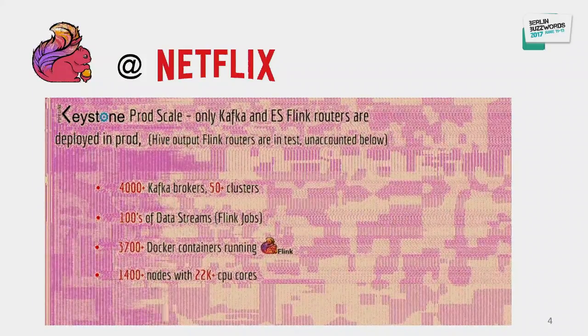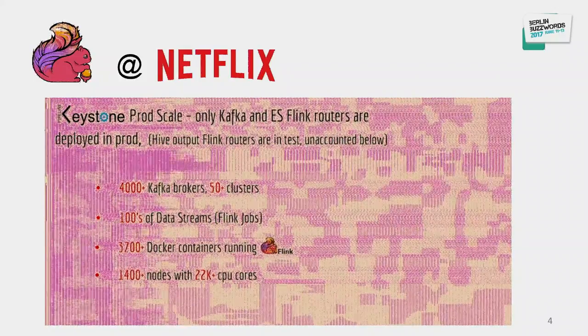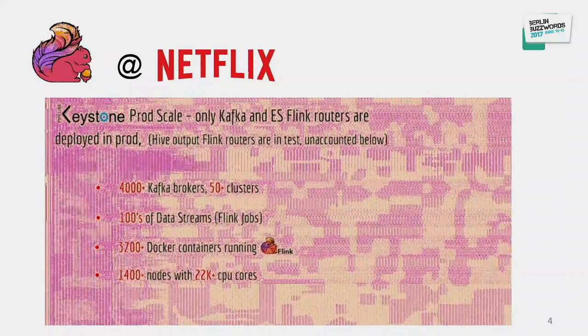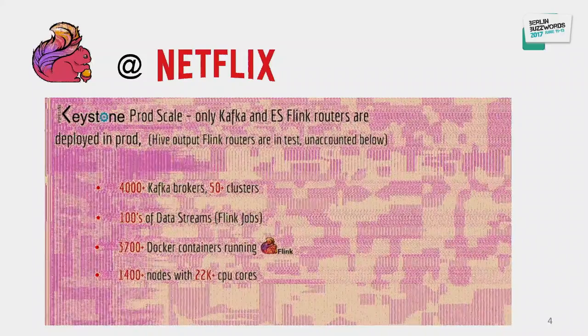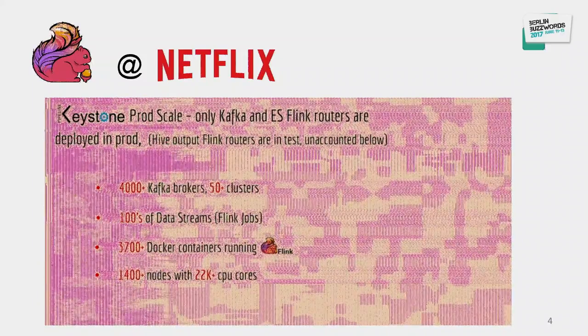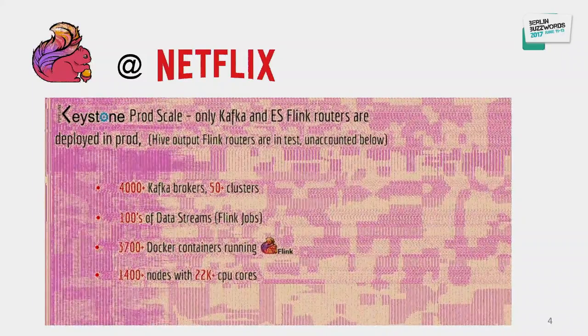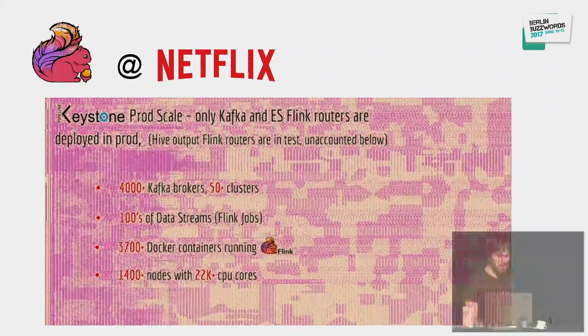The scale is quite significant. Flink is running in over 3,000 container images, together with 4,000 Kafka brokers and hundreds of streams.